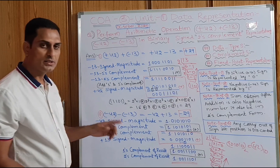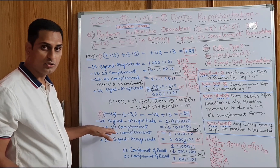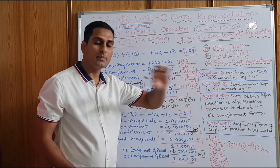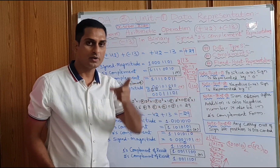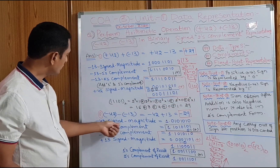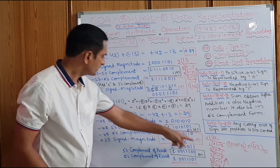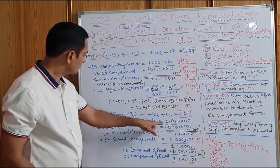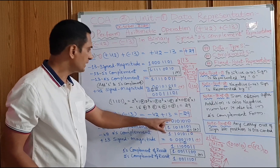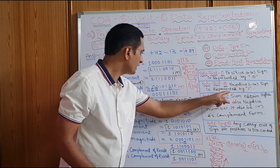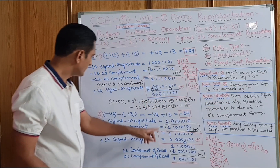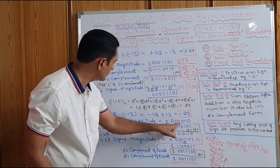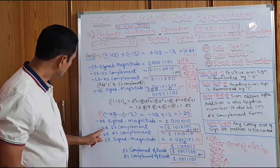Minus 42 is a negative number and can be represented in three ways. Fixed negative number can be represented in three ways. The first one: minus 42 signed magnitude. Because this is minus, the sign bit is 1. The remaining bits are 1, 0, 1, 0, 1, 0 — same binary bits as 42.